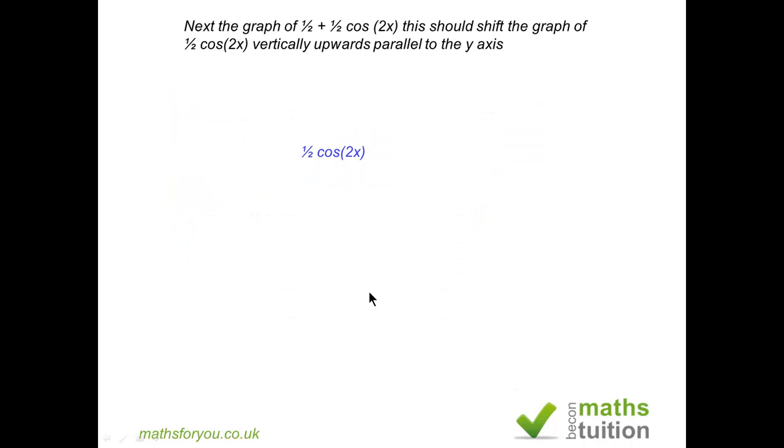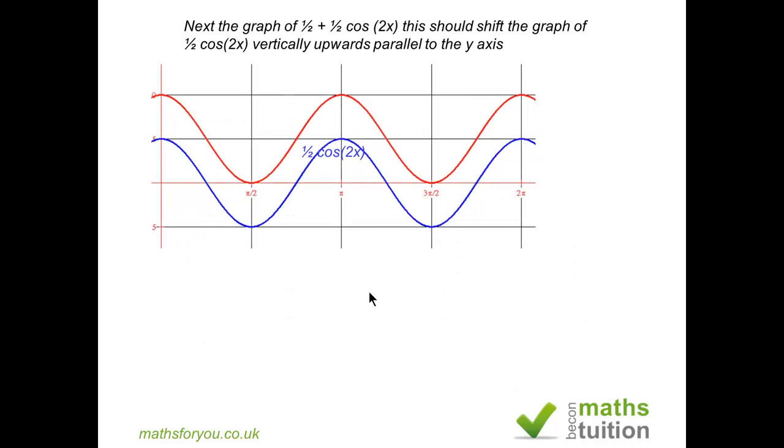Now we have done the graph of 1/2 cos(2x), we now need to do a graph of 1/2 plus 1/2 cos(2x) and that suggests a vertical shift of half a unit. So if we move the blue graph by half a unit, that will give us the red sketch. The red graph is the sketch for 1/2 plus 1/2 cos(2x) or cos²(x).